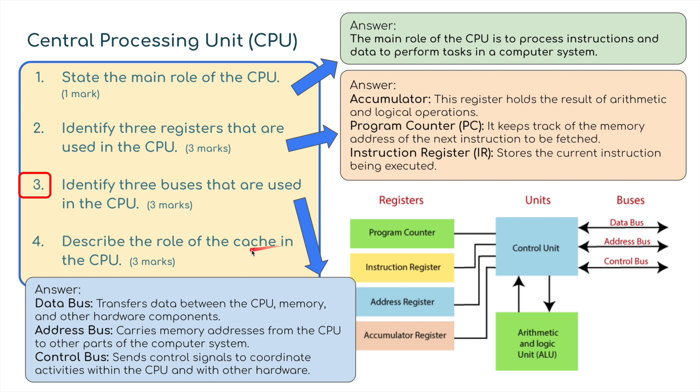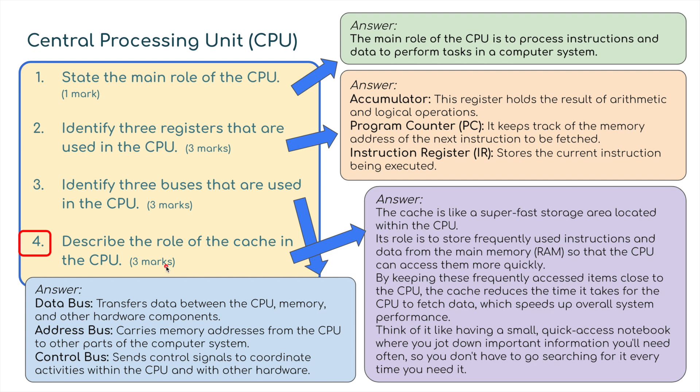Describe the role of cache in the CPU. The cache is like a super fast storage area located within the CPU. Its role is to store frequently used instructions and data from the main memory RAM so that the CPU can access them more quickly. By keeping these frequently accessed items close to the CPU, the cache reduces the time it takes for the CPU to fetch data, which speeds up the overall system performance. Think of it like having a small quick access notebook where you jot down important information you'll need often.